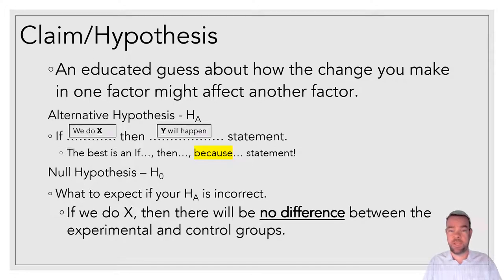An even better one would be an if-then-because statement. If we do X, then Y will happen because scientific concept. The null hypothesis is sort of, I call it the Eeyore hypothesis. Oh, it doesn't matter. Nothing's going to change. There's no difference between your experimental and your control group. That's what you're going to say. So if we do X, then basically nothing will happen. The groups will all be the same. Y will not change.